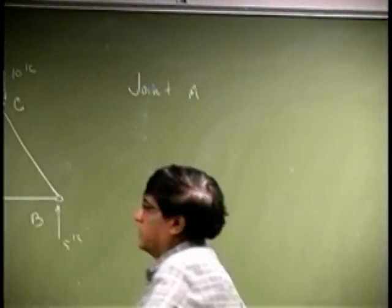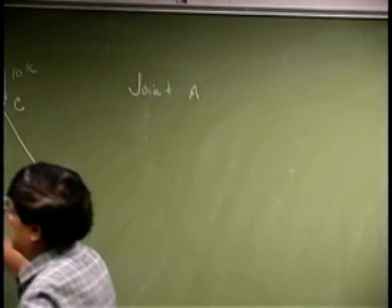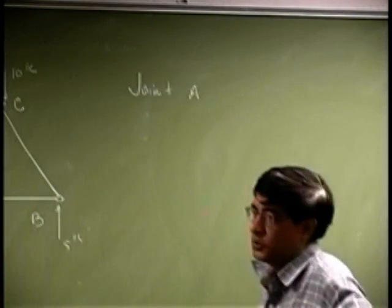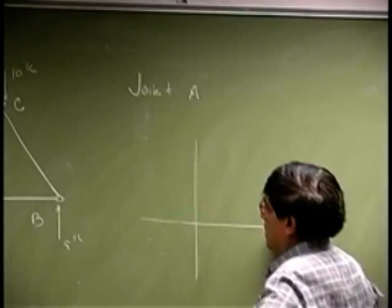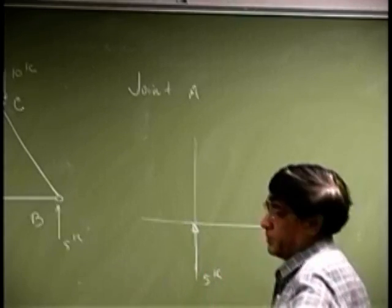See what happens at joint A. So we are going to isolate this joint and then show every force on that joint. So we have a force here as 5 kips.